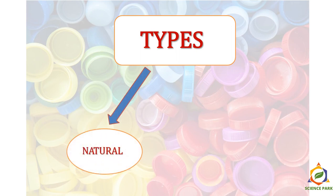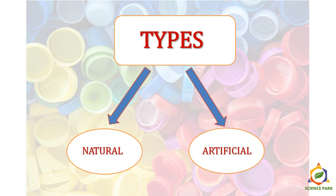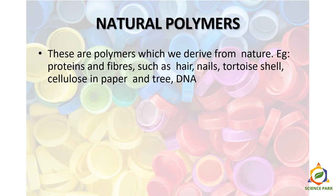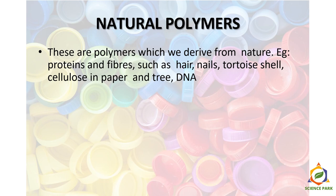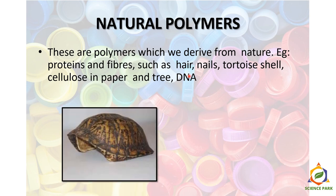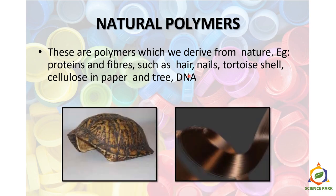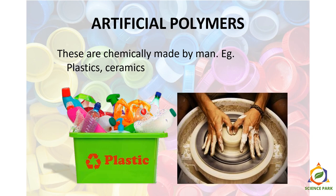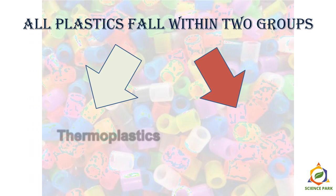Polymers can be natural or man-made. Natural polymers are derived from nature — for example, proteins and fibers such as hair, nails, tortoise shells, cellulose in paper and trees, or DNA. Artificial polymers are chemically made by man — for example, plastic and ceramic materials. We'll discuss different types and groups of plastic, their reactions, how they are chemically prepared, and their properties.